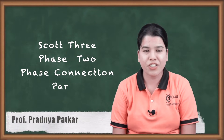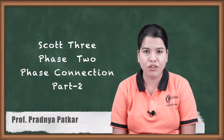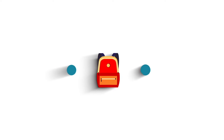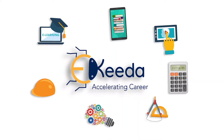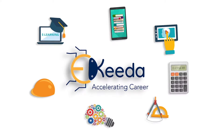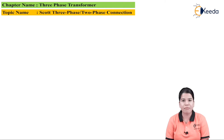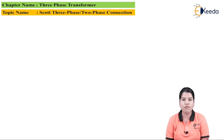Hello friends, in this video we are going to study the further part for the Scott connection of 3-phase to 2-phase transformer. Sometimes the primary winding of the main transformer and teaser transformer can also be connected into a 4-wire system. In case of a 4-wire system, the position of neutral point N is very important.